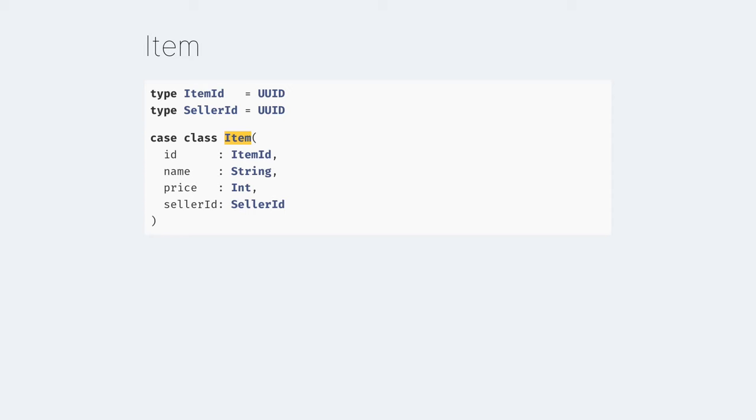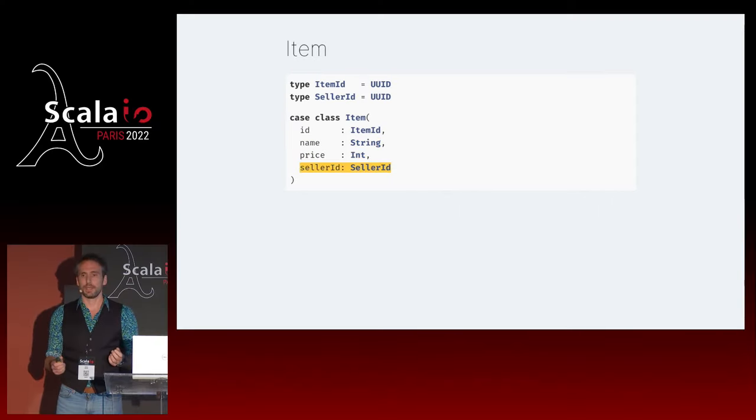That would make for a very boring presentation, so we're going to place ourselves in an alternate timeline - a slightly darker timeline, really - in which I did the wrong thing and automated a job away from a poor intern. Now had I done that, the heart of my platform would have been the Item, where an item is whatever it is you can buy.